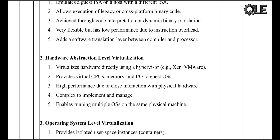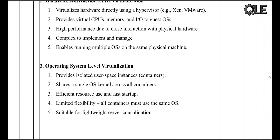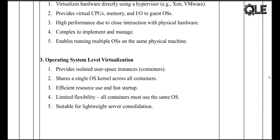Next is hardware abstraction level virtualization — the heart of full virtualization. This level uses a hypervisor like VMware, Xen, or KVM to virtualize physical resources: CPU, memory, and storage. It gives each OS its own virtual machine. It's super powerful and flexible — you can run multiple operating systems on one physical machine — but it's also complex to manage and configure.